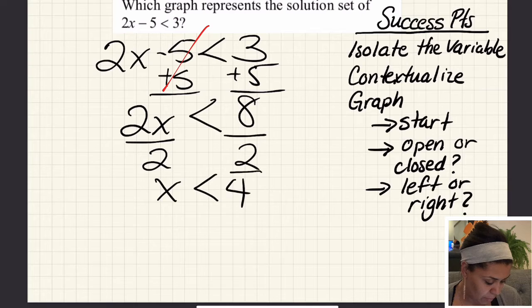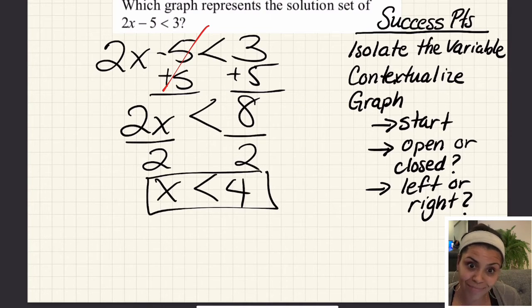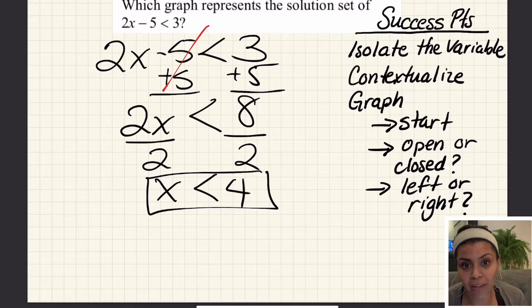I want the x by itself, so let's divide by 2. So x < 4. Let's think conceptually what does this mean. It means I can have any number as long as it's less than 4. Any number that satisfies that, as long as it's less than 4, can work and be true.